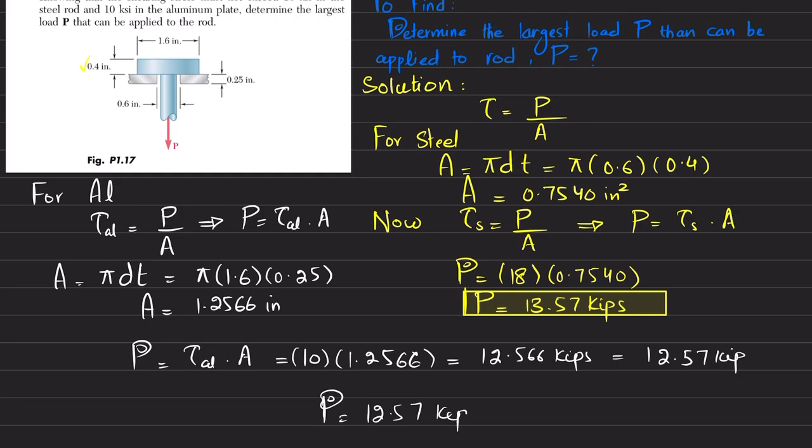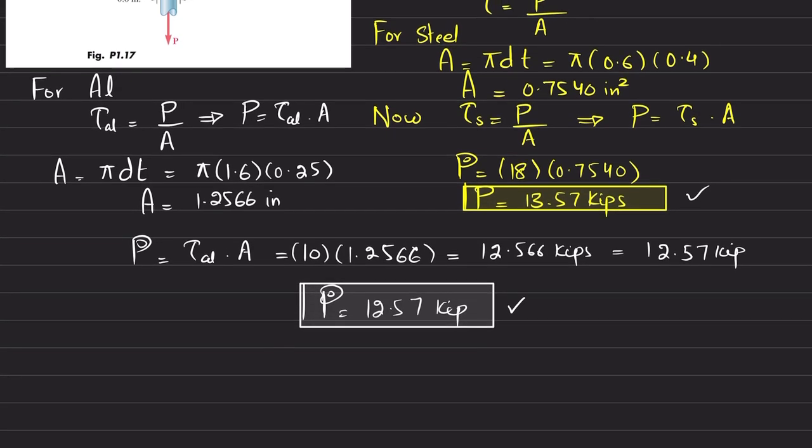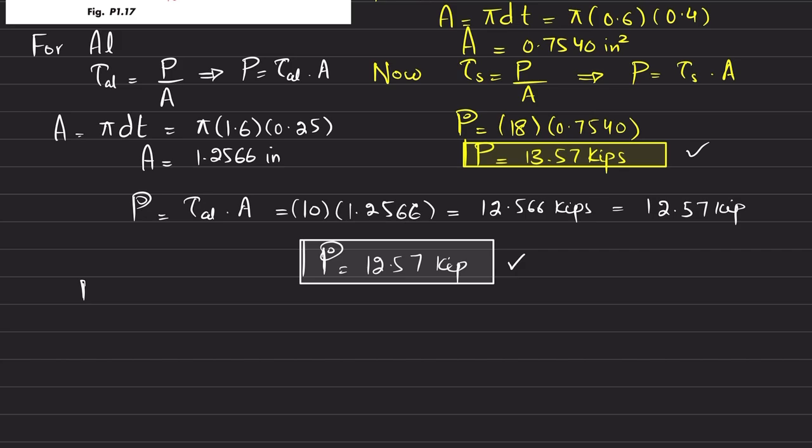Now you can see you have two loads - either you can apply this load or this load. We will always choose the smaller value of P. We will choose the smaller value of P.